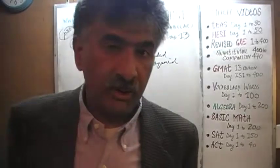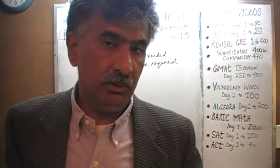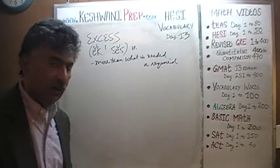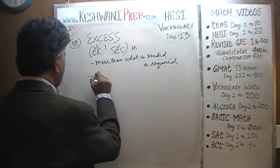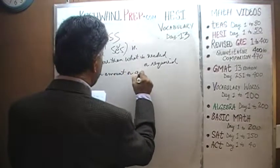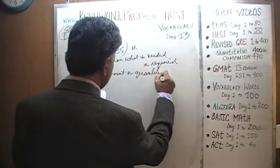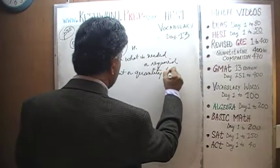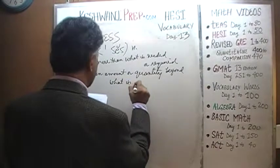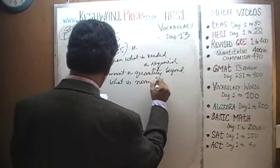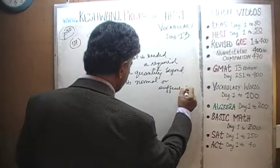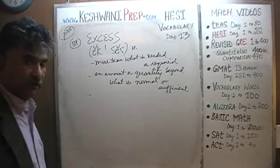If you have more than what is required, if you have more than what is needed, you have an excess amount — you have an overflow, you have a surplus. An amount or quantity beyond what is normal or sufficient. As I said, an excess is an overflow.